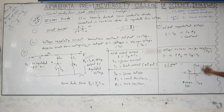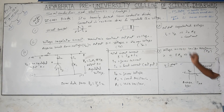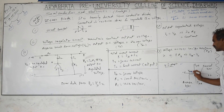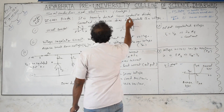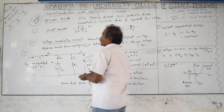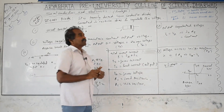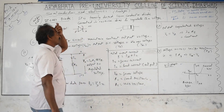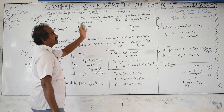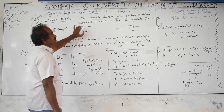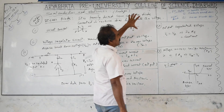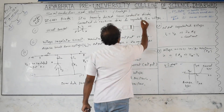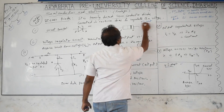The Zener diode is preferred in reverse bias only, to keep the voltage constant — this is called regulated voltage. The Zener diode is a highly doped semiconductor compared to the ordinary diode; the doping concentration is a little higher. It must be connected in reverse bias to regulate the voltage and keep V equal to constant.